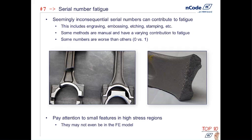Number seven — and this is perhaps one of my favorites — has to do with very small, seemingly inconsequential bits of geometry. It's surprising how often this occurs. These inconsequential-seeming serial numbers can in fact contribute to fatigue. Depending on your structure, it may be a cast structure with an embossed serial number; in other cases they may have been engraved, etched, marked with a vibrating pin, or perhaps even stamped by striking with a hammer. All of these have the ability to contribute to fatigue, especially if they're in an area of high stress.